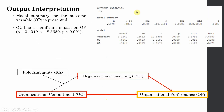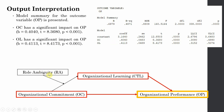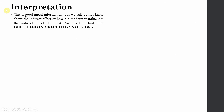Now let's look at the other outcome variable, organizational performance. Organizational commitment has a significant impact on OP — the p-value is less than 0.001 with no zero in the confidence interval. Similarly, organizational learning has a significant impact on OP. The moderator, role ambiguity, does not appear in this output because it is not directly affecting organizational performance here.